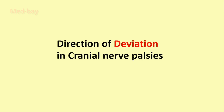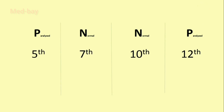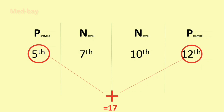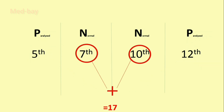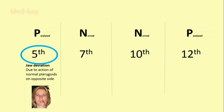Let's learn about the direction of deviation of different structures supplied by cranial nerves. Remember the mnemonic P and N, for nerves 5, 7, 10, and 12, where P is paralyzed and N is normal. The sum of both P's is 17, and the sum of both N's is also 17. In trigeminal nerve lesion, the jaw deviates to the paralyzed side.